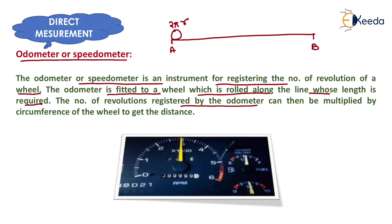The odometer directly multiplies the circumference of the wheel by the number of revolutions between points A and B to determine the linear distance between them. This type of instrument is known as an odometer or speedometer.